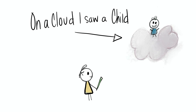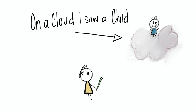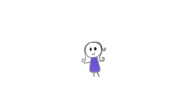The next lines say: 'On a cloud I saw a child, and he laughing said to me.' Note that the child here is up in the sky — in a cloud, like an angel would be. They aren't even touching the ground where the piper is. They are right now untouched by the world.